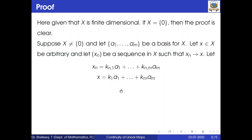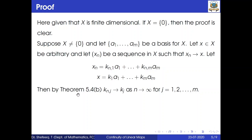We want to show that f(xn) converges to f(x) in Y. Since xn converges to x, by Theorem 5.4(b), the coefficients knj converge to kj as n tends to infinity, for each j = 1, 2, ..., m. Then f(xn) = f(kn1·a1 + ... + knm·am).